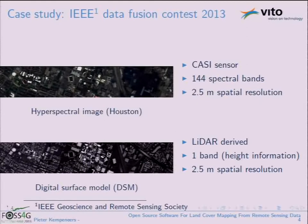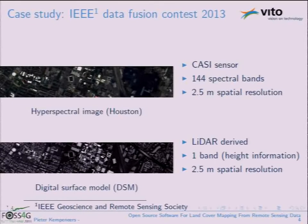For those not familiar with hyperspectral images, they are a special kind of sensor that acquires data in a large number of spectral bands. Instead of an RGB camera with only three bands in the visual spectrum, the CASI sensor has 144 very narrow spectral bands — a lot of information to deal with. The spatial resolution was 2.5 meters per pixel for both the hyperspectral image and the digital surface model, which provides height information from the LiDAR laser-based sensor. The images were already co-registered, which was helpful.